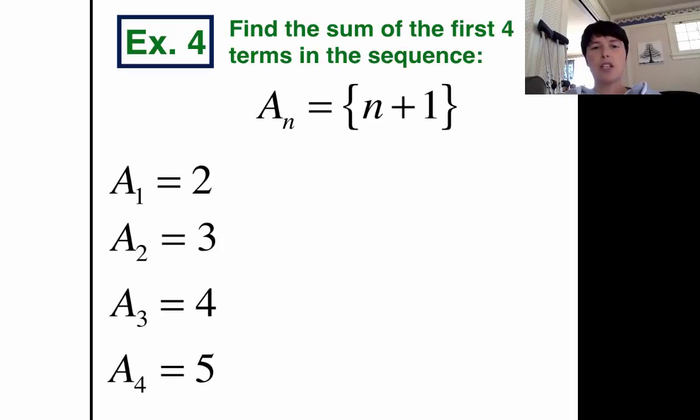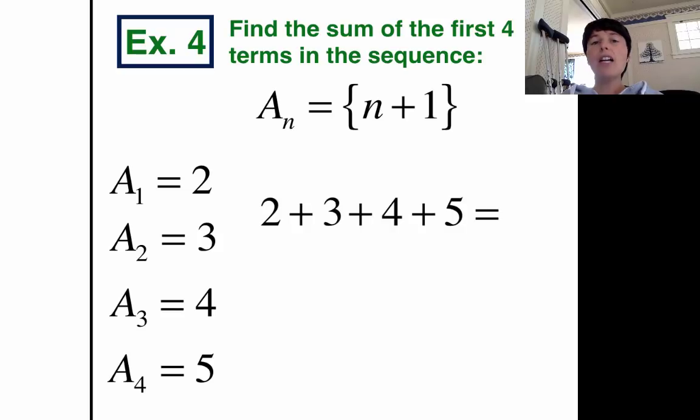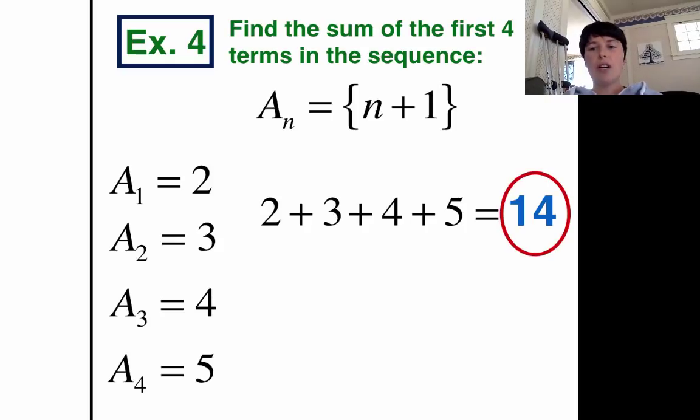But to answer the question, the question was find the sum. So sum means to add. So our job is to now add up the sequence: 2 plus 3 plus 4 plus 5. And what's 2 plus 3 plus 4 plus 5? Oh, I hope you got it. It's 14. So the answer to our question is 14. The sum is 14.